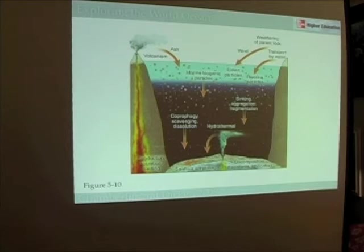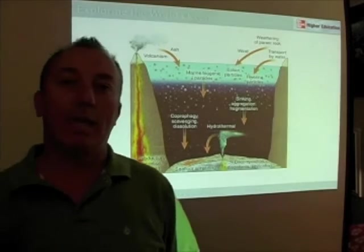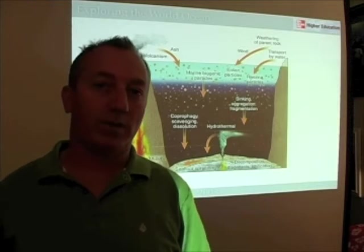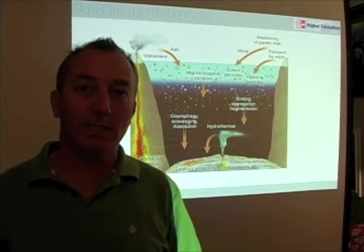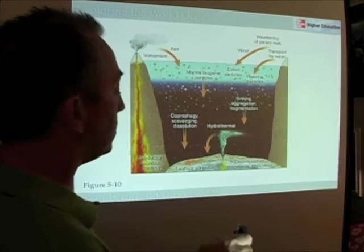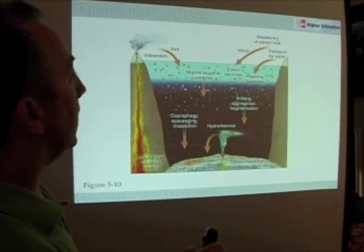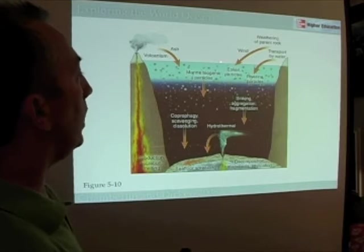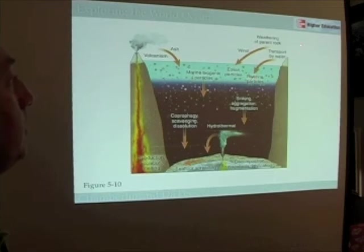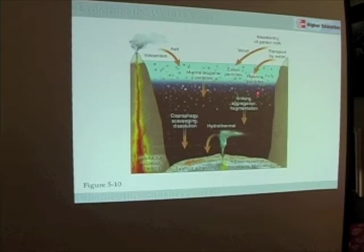Weathering of parent rock means anything that breaks down mountains — rainfall, acid rain, winds, earthquakes, or even you going out with a hammer and beating on the rocks. That's called weathering, and it creates the sediments. Wind or water then transports those sediments and eventually carries them into the ocean. When they get into the ocean, they may sink. If they are carried by wind, we call those eolian particles.